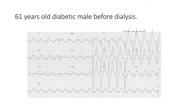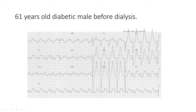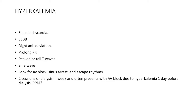Next is a scenario of a 61-year-old diabetic male before dialysis. The obvious ECG findings are sinus tachycardia, left fascicular branch block, right axis deviation, tall/peaked T waves with notching, prolonged PR interval, prolonged QRS, and sine waves in severe cases. The scenario of a diabetic patient with an ECG taken before dialysis points toward hyperkalemia. Always look for AV blocks, sinus arrest, and escape rhythms in patients with hyperkalemia.